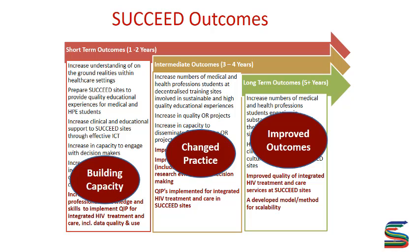As Succeed, we have put together outcomes — what we want to see as we go along until the end of Succeed. We've divided our outcomes into short-term, intermediate, and long-term. Since Succeed is for a term of five years, we divided those into the first and second year, which we've already done, where we focused mostly on building capacity. The intermediate period — the year we're in to the next year, year four — we want to see change in practice. And lastly, towards the end, we want to see improved outcomes.